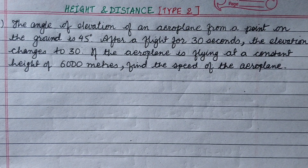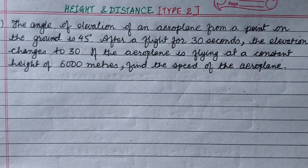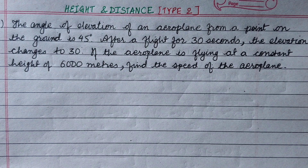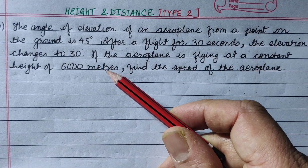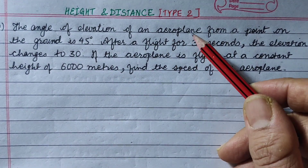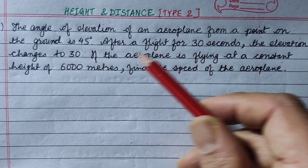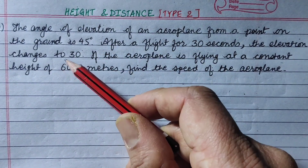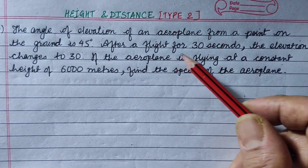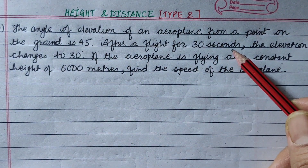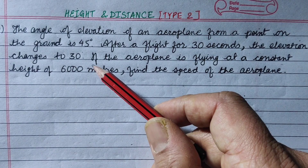Hi everyone. As I am looking at height and distance, the angle of elevation of an aeroplane from a point on the ground is 45 degrees. After a flight for 30 seconds, the elevation changes to 30 degrees.